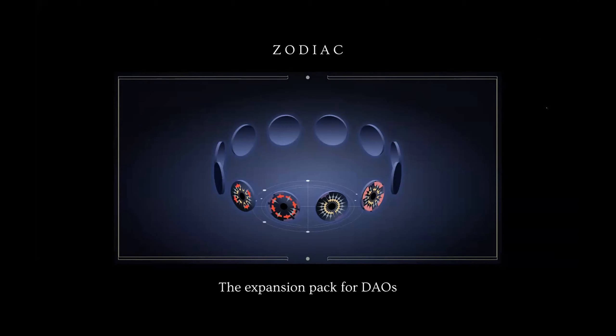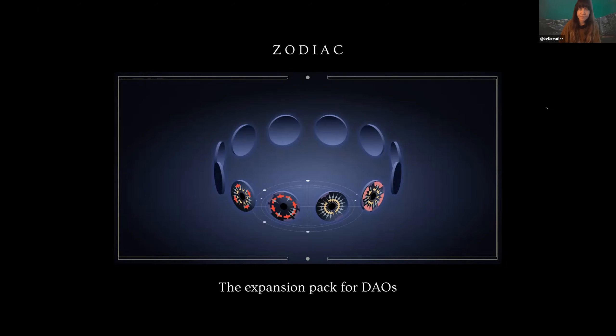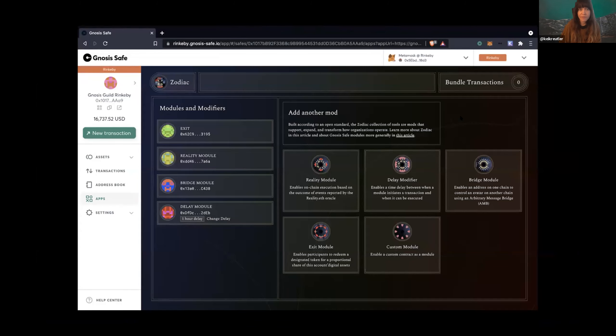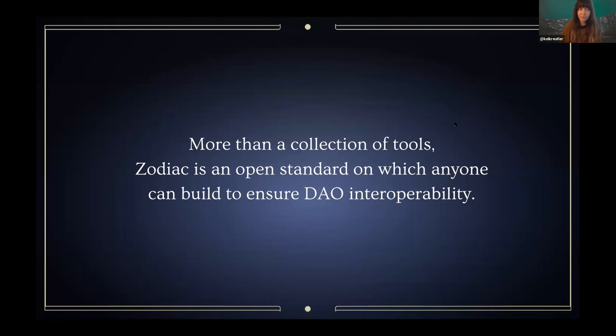First, a brief overview for those who are new or want a refresher on what Zodiac is. We call Zodiac the expansion pack for DAOs. It's a composable design philosophy for DAOs and a collection of tools built according to an open standard, because DAOs are not monoliths — they're constellations. Zodiac launched mid-September with four different modules that are live and accessible through the Safe app store. If you have your Gnosis Safe and go to the apps tab, you'll see Zodiac, which opens a screen where you can equip different modules and functionalities for your DAO, including cross-chain DAOs.